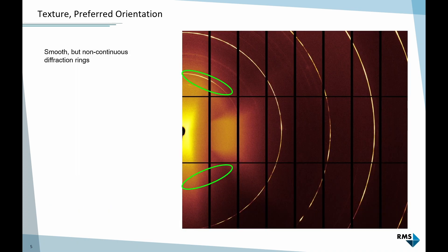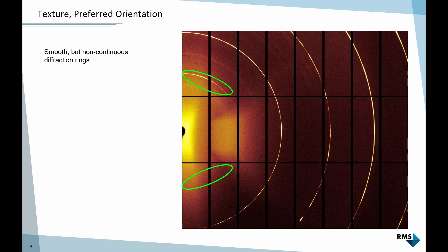As I showed yesterday, it changes our peak intensities. Some peaks get lower because we don't have enough crystals contributing to these peaks, and others get stronger because there's too many crystals.